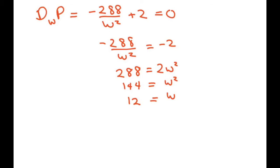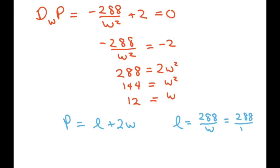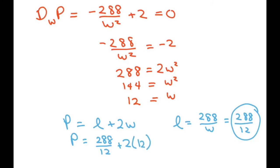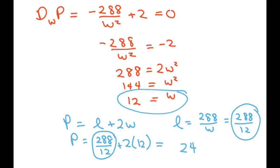We go back to our perimeter: L plus 2W. We have L equals 288 over W, which is 288 over 12. Substituting that in, we get perimeter equals 288 over 12 plus 2 times 12. That gives us a length of 24 and a width of 12.